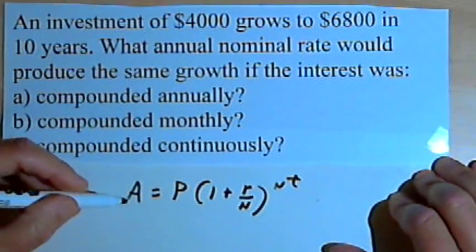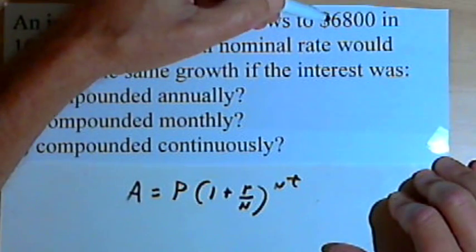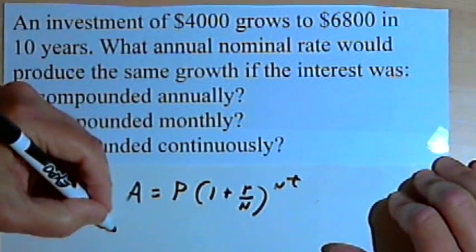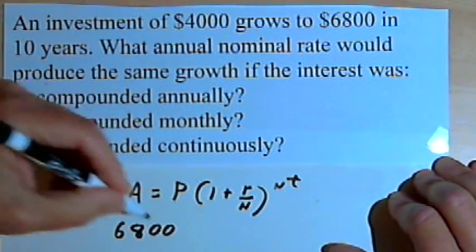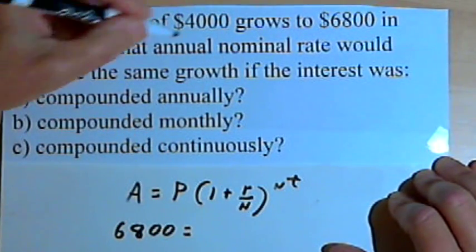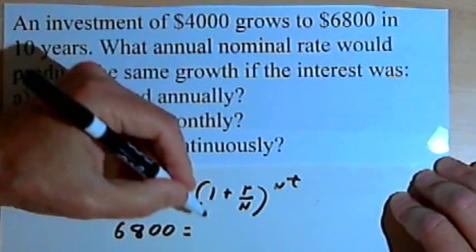Now A is the amount of money that we're getting back. We want to get back $6,800, so we can fill in that $6,800. And P is the principal, which is the $4,000 we would invest initially.